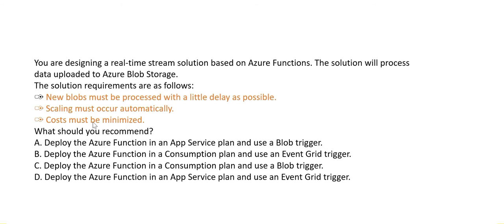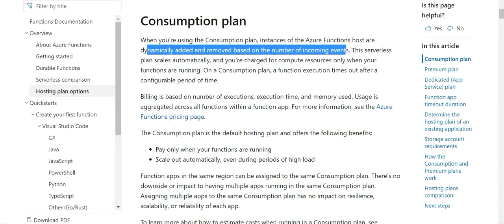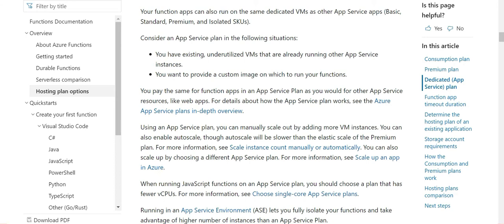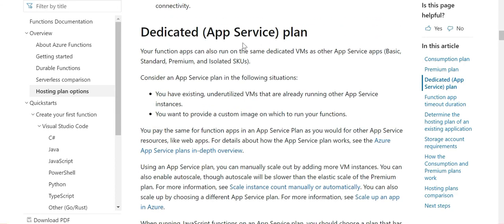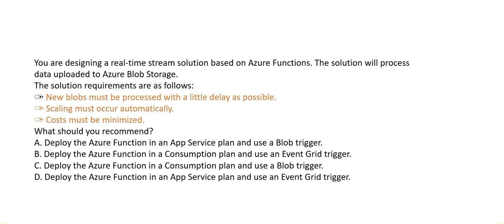New blobs must be processed with as little delay as possible — that means a trigger is needed. We have the Consumption Plan combined with either an Event Grid trigger or a Blob trigger. In a Dedicated App Service Plan, you have to manually scale out by adding more VM instances — but the question says scaling must occur automatically. Hence options A and D using the Dedicated plan are eliminated. We now have to choose between option B and option C.